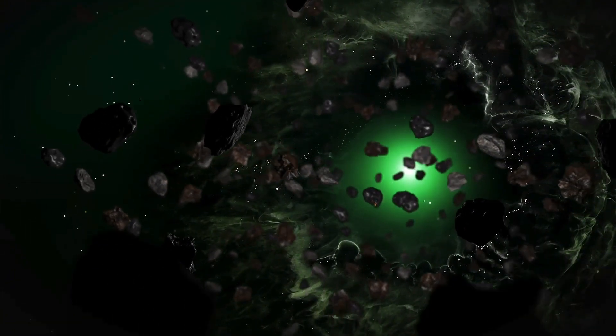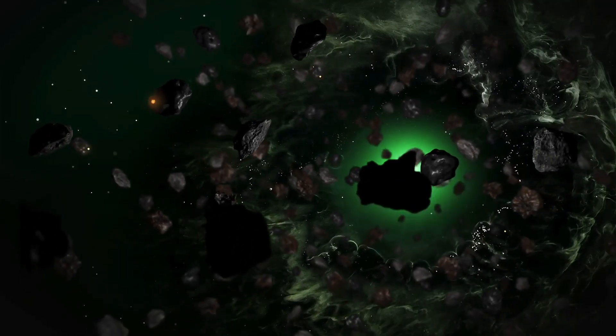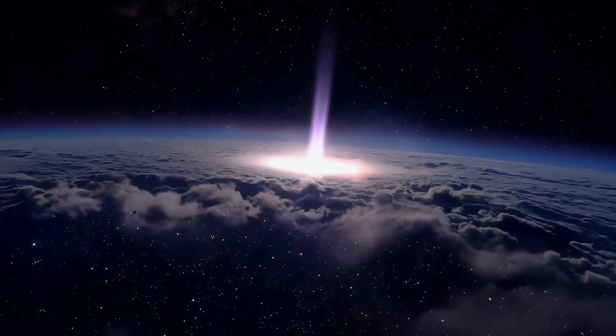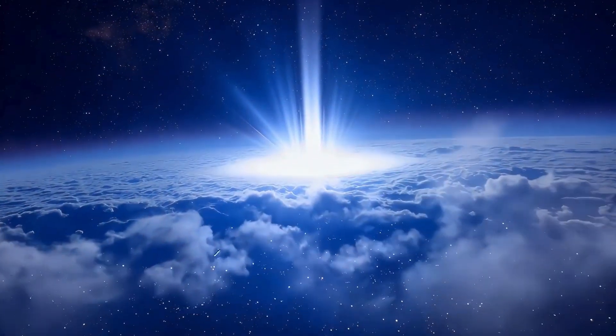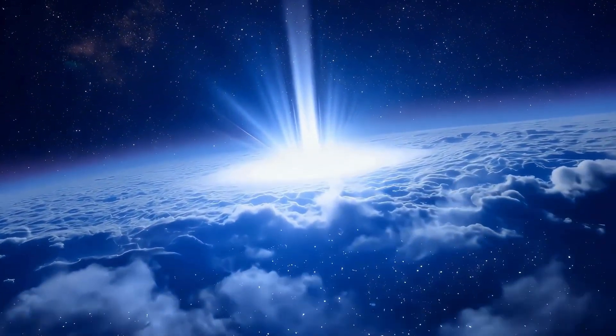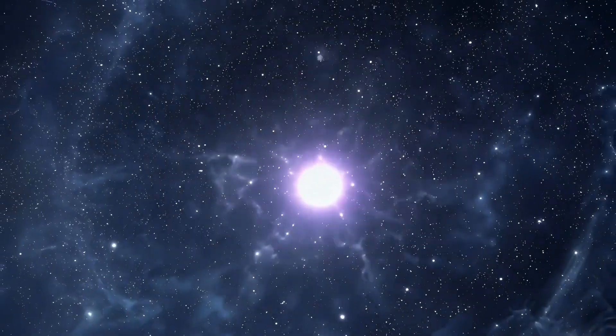Proxima b, located roughly 4.25 light-years away, was believed to be tidally locked, meaning one side is always facing its star while the other remains in perpetual darkness, similar to how our moon behaves.